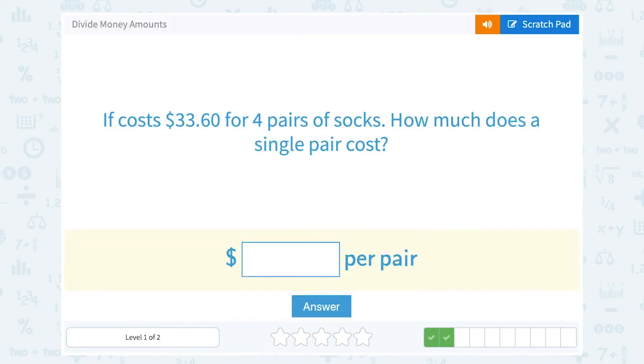It costs $33.60 for four pairs of socks. How much does a single pair cost?